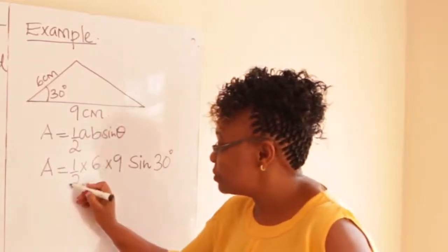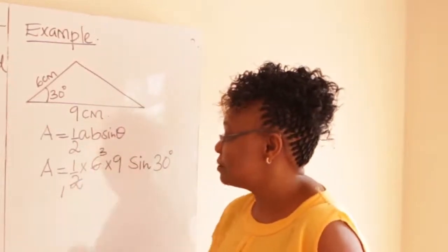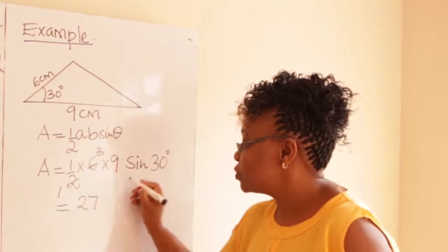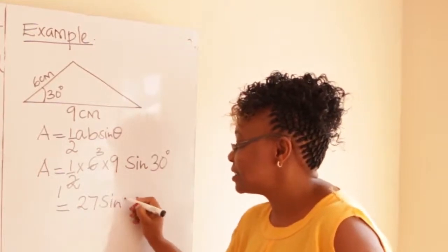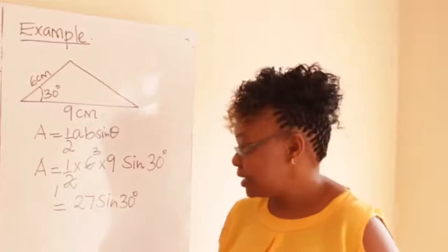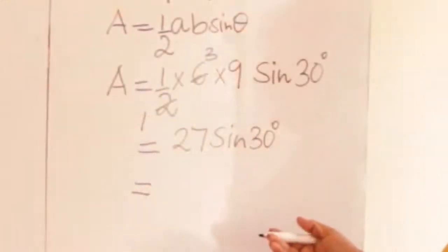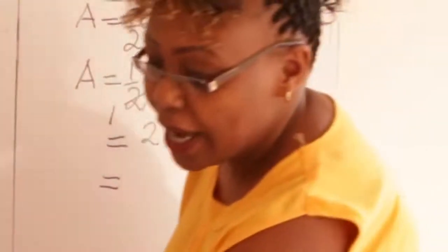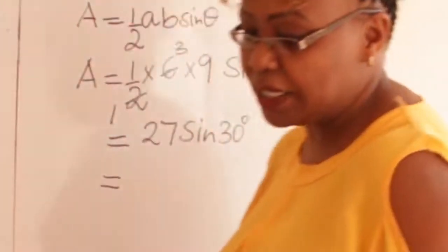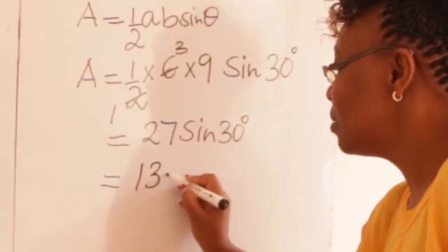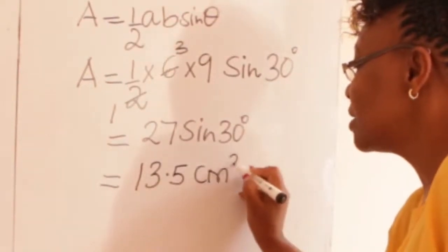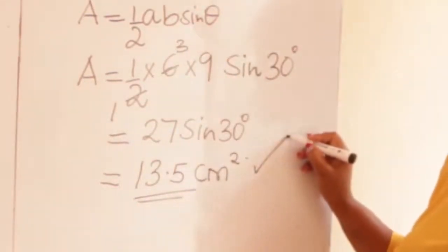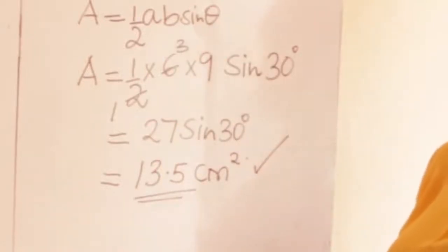From there, you can simplify: divide six by two to get three, so this gives us three times nine, which is 27, times sine 30. Using a calculator or mathematical tables to find 27 sine 30, you should get 13.5 centimeters square. And that is the area of that triangle.